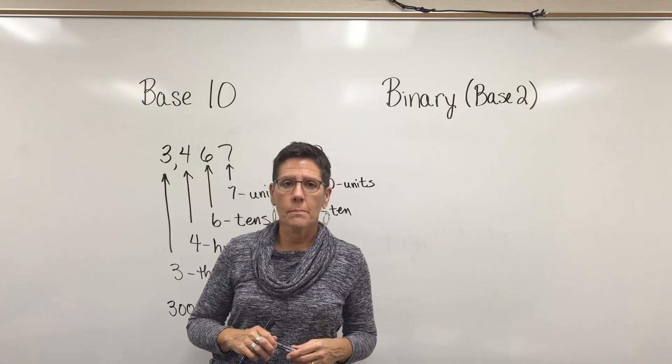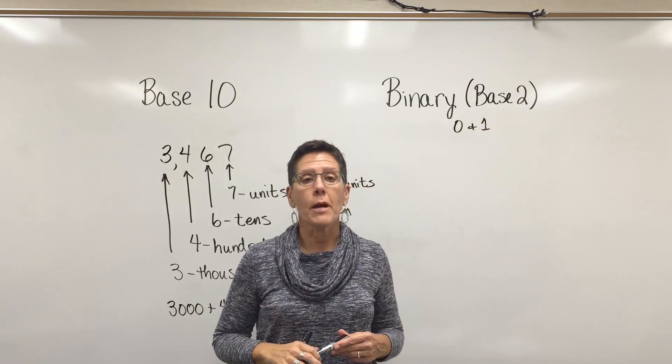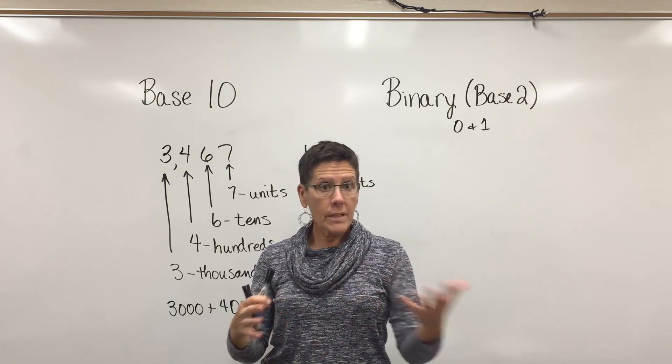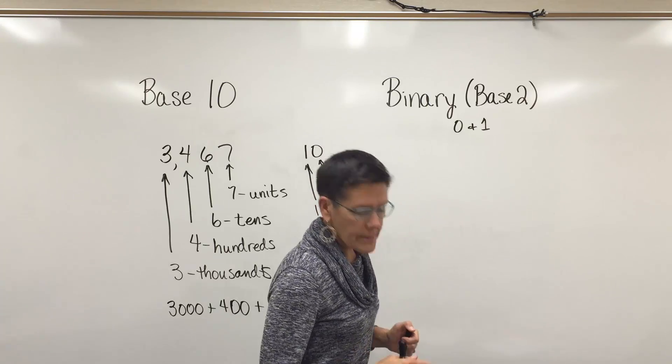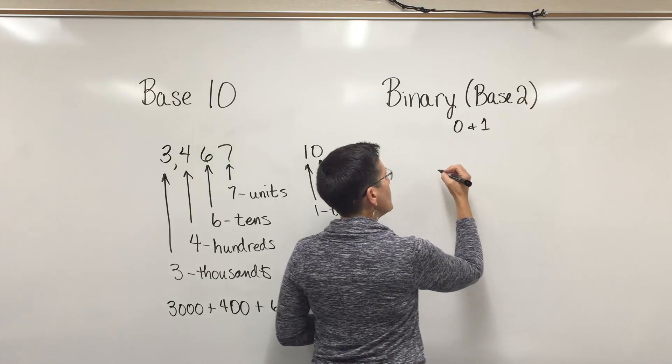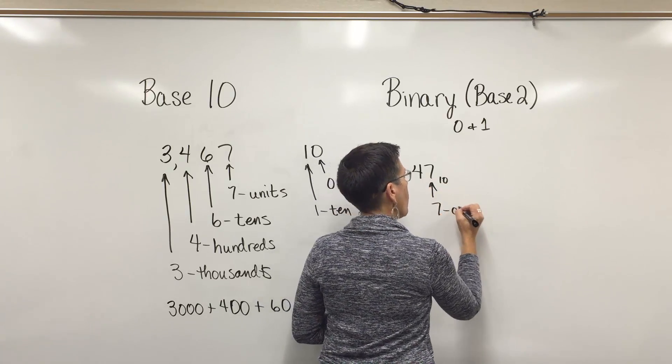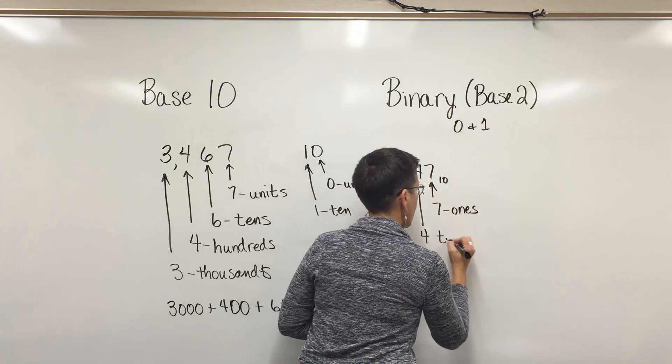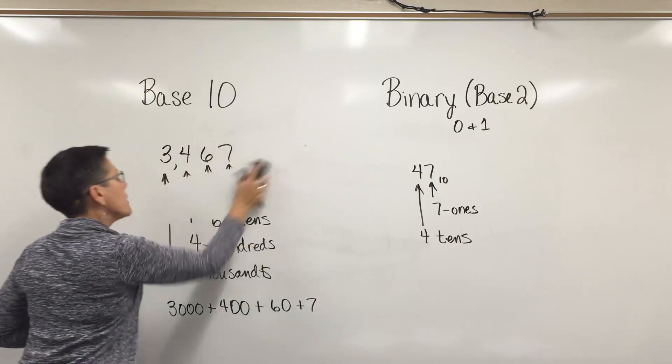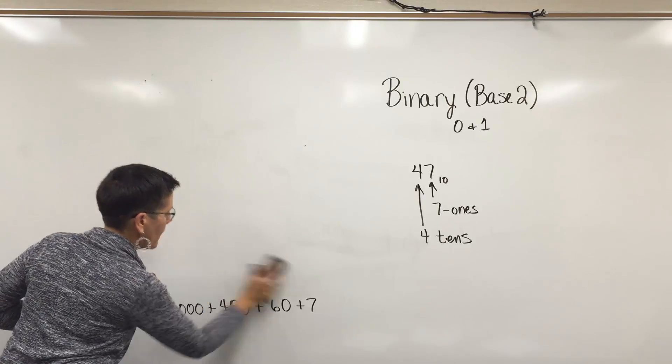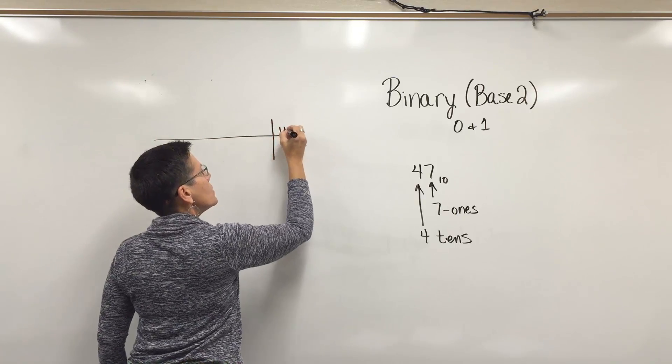In a binary numbering system, base two, we only use the digits zero and one, and that's the way our computers are based and programmed. It's a string of data with bits of information using zeros and ones to represent numbers in our world, the base 10 world. What I'd like to do is take from the worksheet that I provided for you and illustrate how we would convert the number 47, which is a base 10 number.